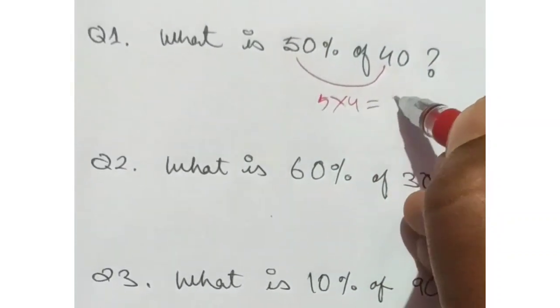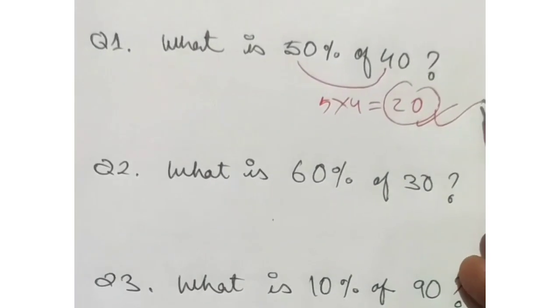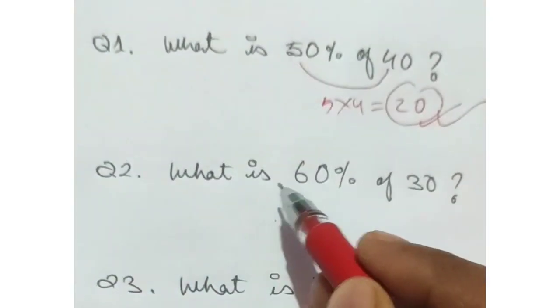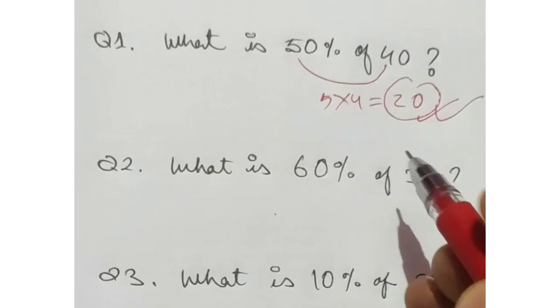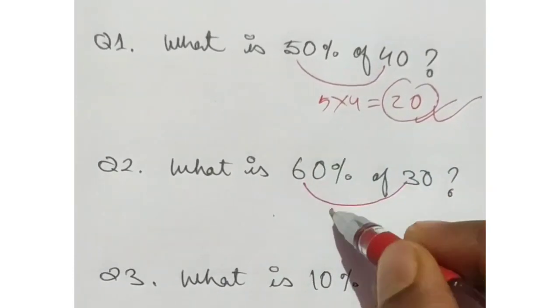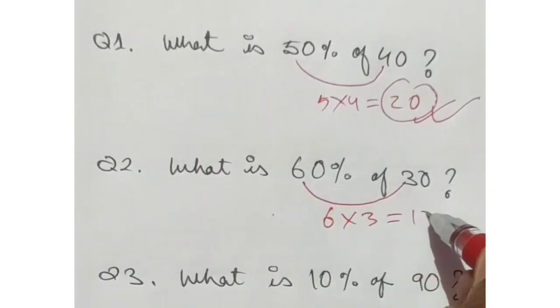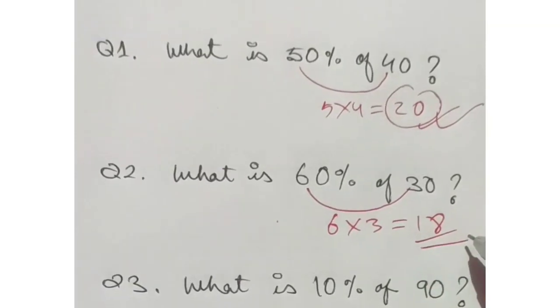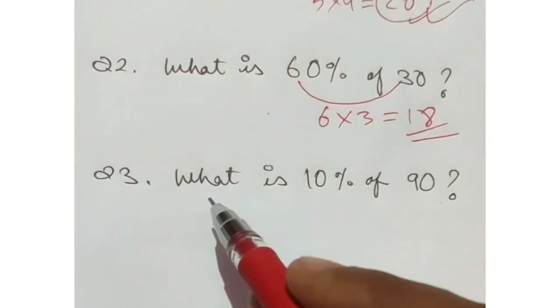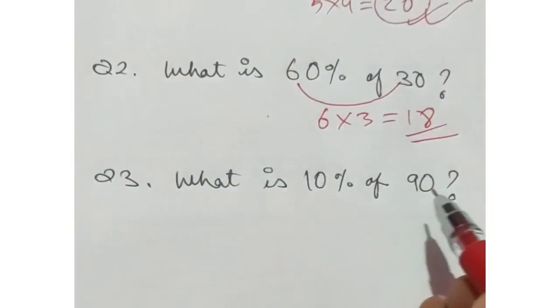5 times 40, 20, answer 20. What is 60% of 30? 6 times 30, 18, answer 18. What is 10% of 90?